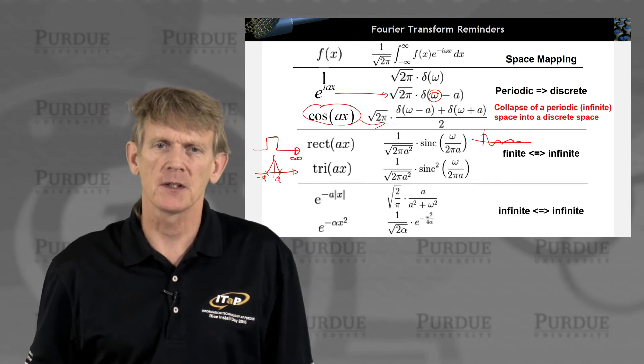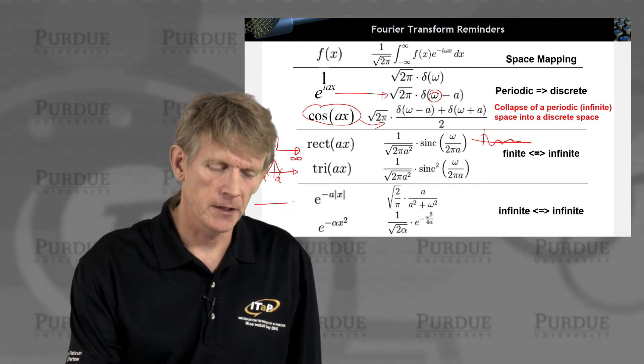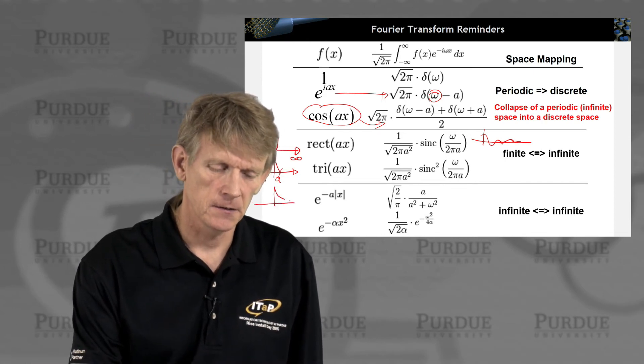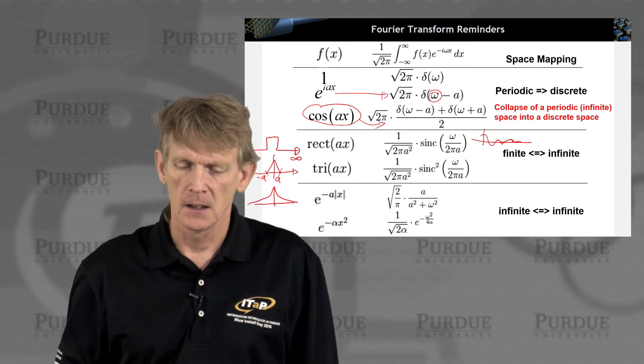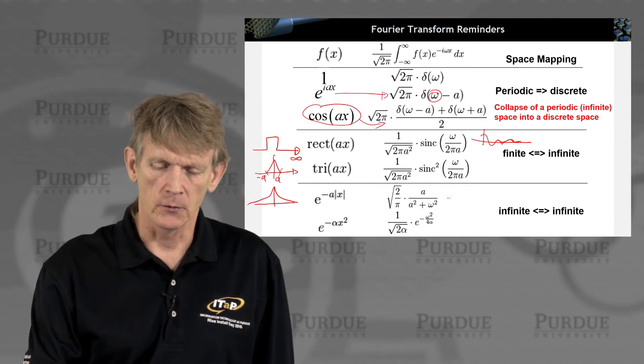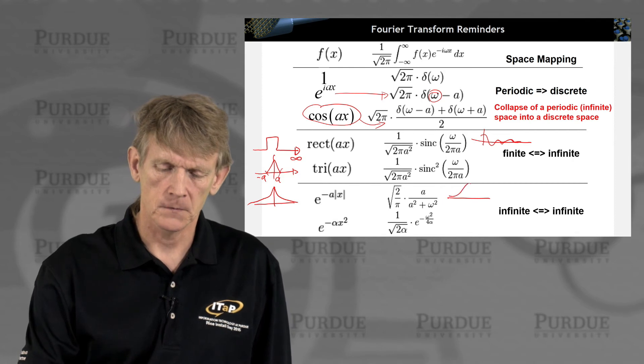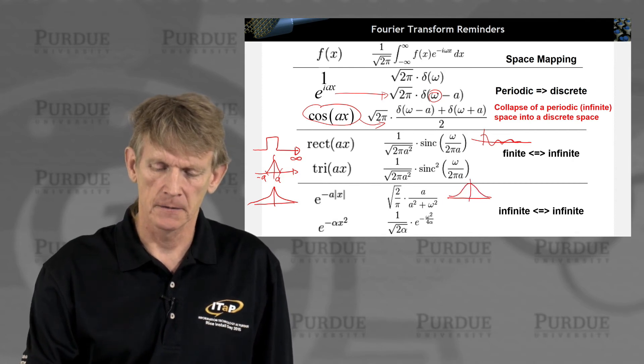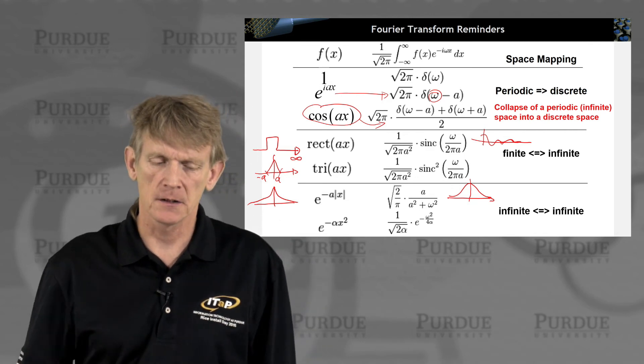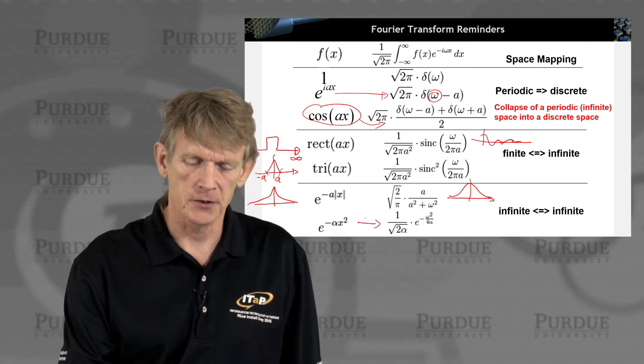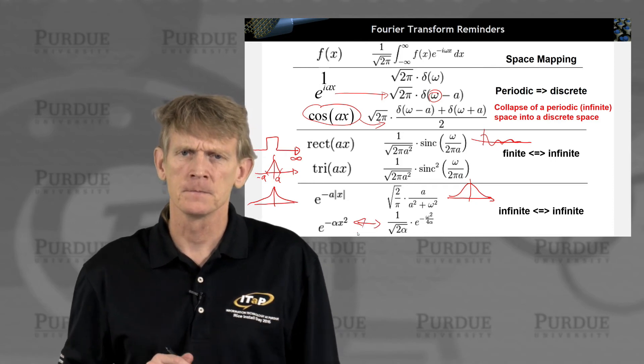There's other maps, for example here the complex exponential that decays to infinity like this. It maps into a Lorentzian, it looks like this, ballpark, and you map infinite to infinite, and of course you remember that a Gaussian maps into a Gaussian. Alright, you've done mapping of spaces before.